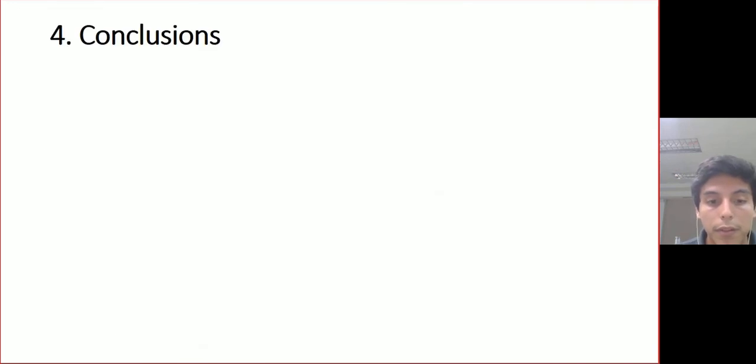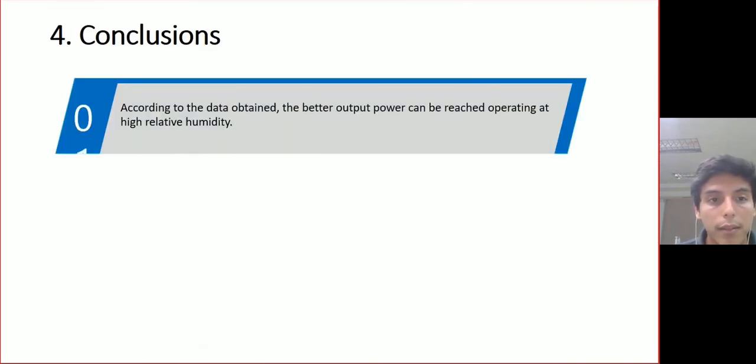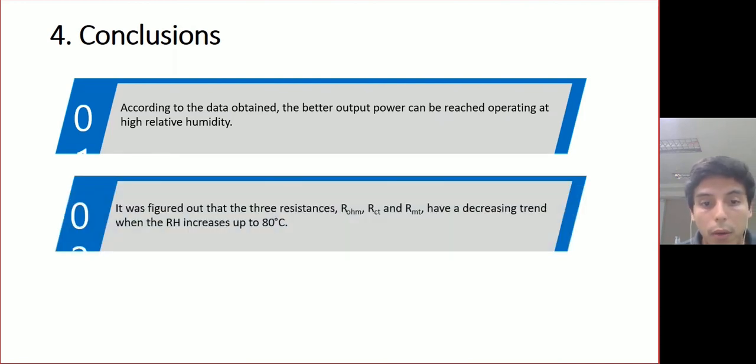So, in conclusion, we have the first that is according to the data obtained, the better output power can be reached operating at a high relative humidity. The next one is it was figured out that the three resistances, ohmic resistance, charge transport resistance and mass transport resistance have a decreasing trend when the relative humidity increases up to 80 degrees Celsius.